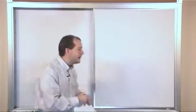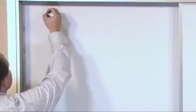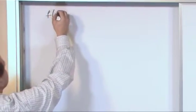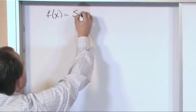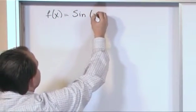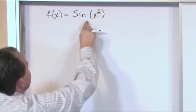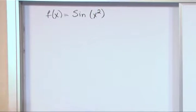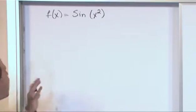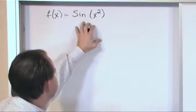So to give you a concrete example of what I'm talking about, the function f of x is equal to the sine of x squared. Now this would be a function that you'll find out here in a few minutes you have to use the chain rule to find it.